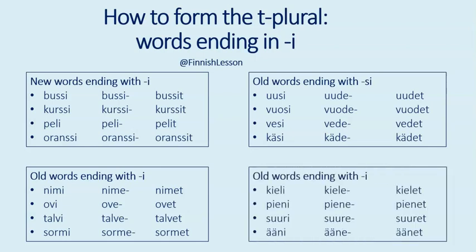And yet one more group with old words ending in I. With this group the stem also ends with the letter I, but the difference is that these words take a different partitive case which we'll study later. That's why they are put in a different category. Examples: kieli — a language or tongue — kielet; pieni — small — pienet; suuri — big — suuret; ääni — a voice or sound — äänet.